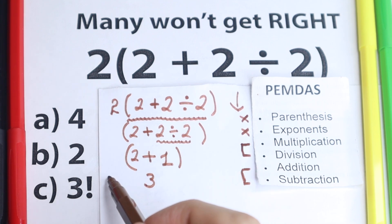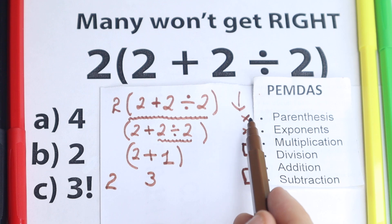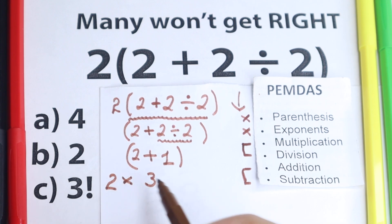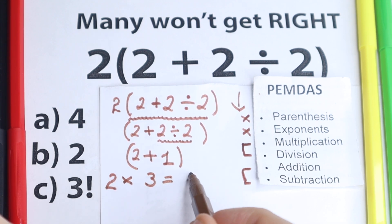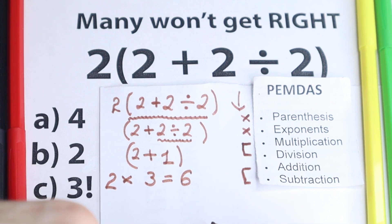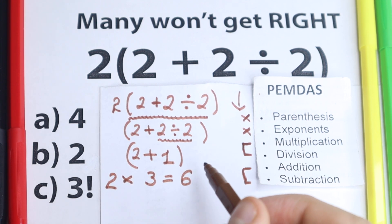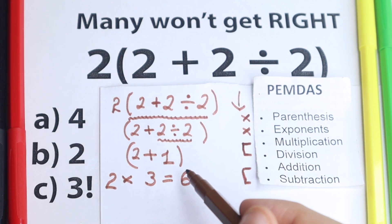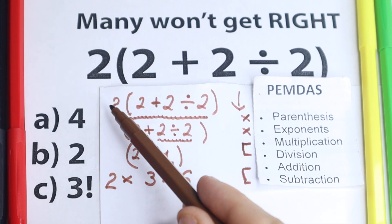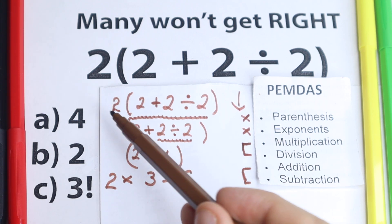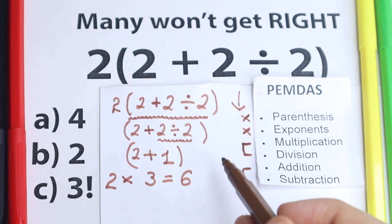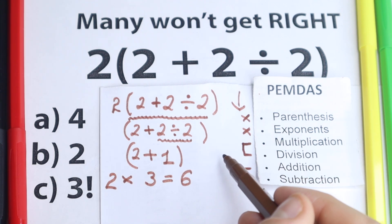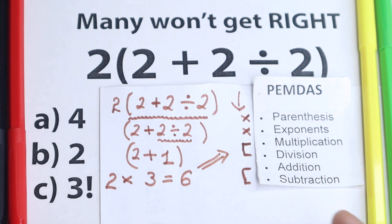We still have the 2 in front, and the first step was to solve the parentheses. So our question now becomes 2 times 3, which equals 6. But this is a very tricky question — a lot of students go with option A or option B. They think it's 4 by going 2 times 2 plus 2, or they get 2 by following a more chaotic order. If you solve it correctly according to PEMDAS, the answer is 6.